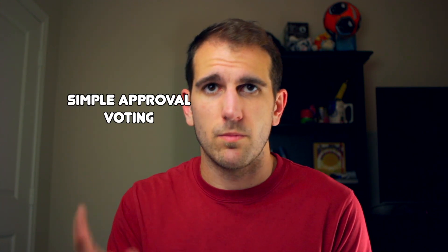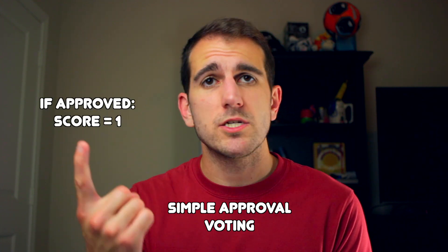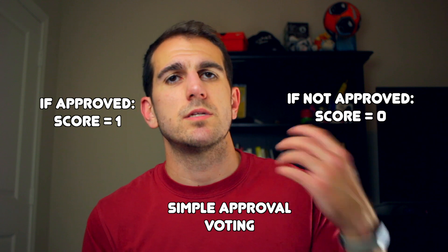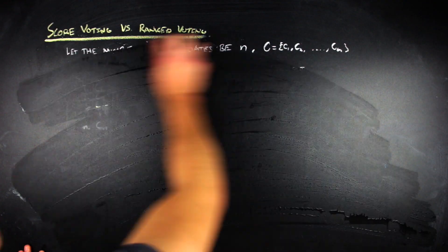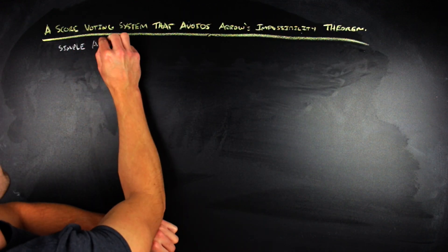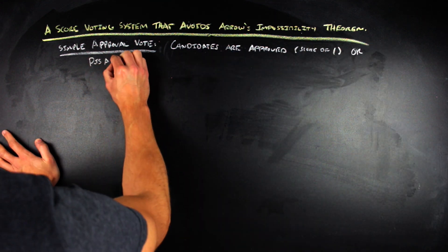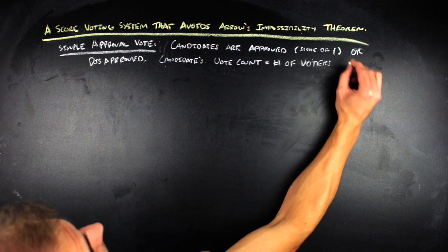One of the most accessible examples of this is the simple approval voting system. The caveat here is that approval voting is its own class of voting systems if you define it in the right way. But in this video, when I say approval voting, I'm thinking about the one simple approval voting system — a voter goes ahead and gives a 1 to a candidate if they approve of that candidate and a 0 to that candidate if they do not approve. A candidate's vote count is then just the number of voters that approved that candidate.